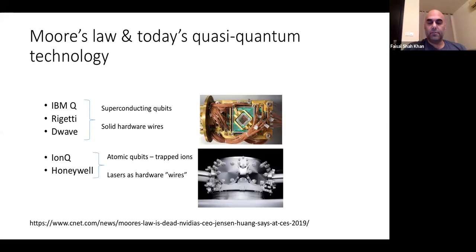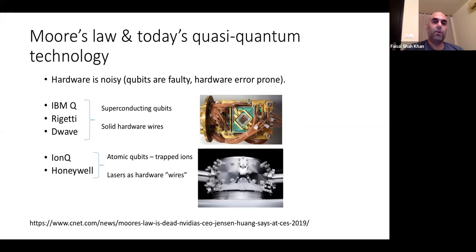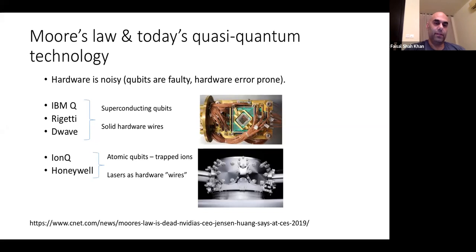IonQ and Honeywell have recently offered an alternative hardware platform for quantum information processing based on atomic qubits or trapped ions. In these platforms, lasers serve as the hardware wires — instead of physical wires, you use lasers to program the quantum computing platform. This is the IonQ processor, a very sleek metallic object housing their atomic qubits and the lasers used to program those qubits. The point is that all of this hardware is noisy — the qubits are faulty and the hardware is error prone.